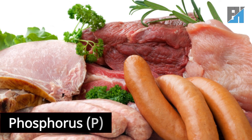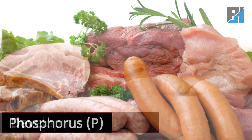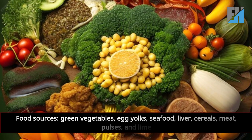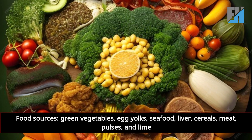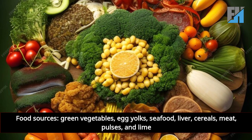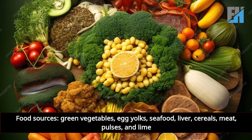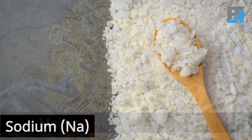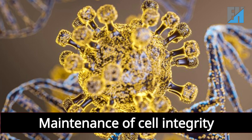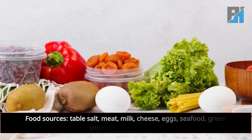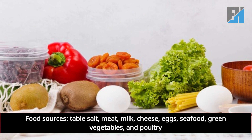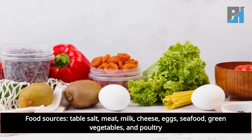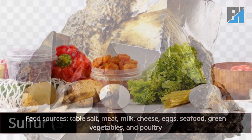Phosphorus (P) supports the development of bones. Food sources of phosphorus include green vegetables, egg yolks, seafood, liver, cereals, meat, pulses, and lime. Sodium (Na) is essential for the maintenance of cell integrity. Food sources of sodium include table salt, meat, milk, cheese, eggs, seafood, green vegetables, and poultry.